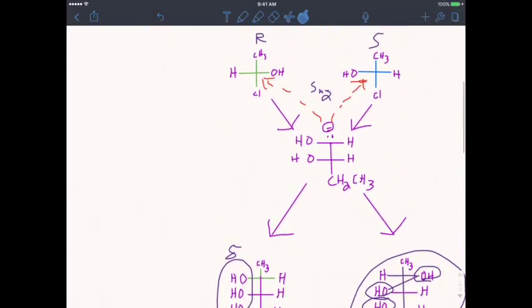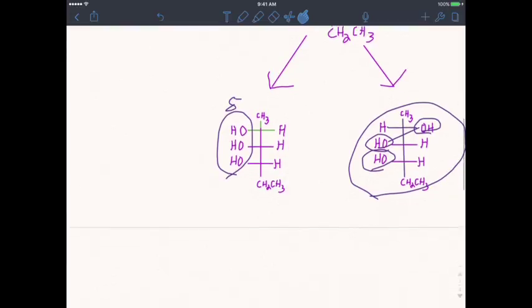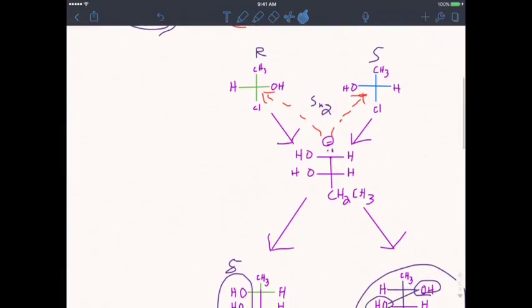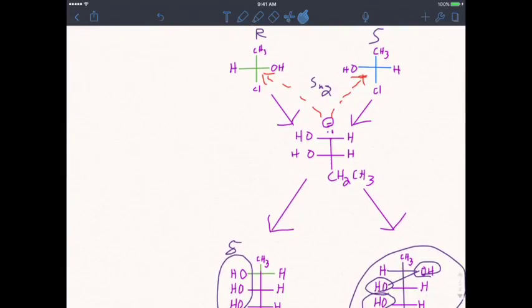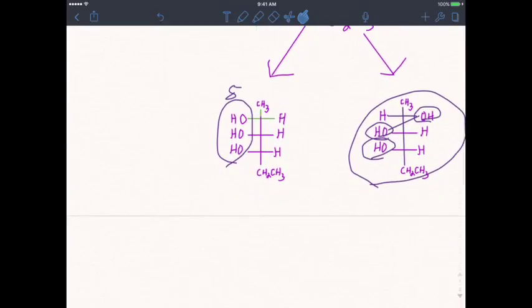So basically the way you resolve two enantiomers or a racemic mixture is you react them with an optically pure compound and boil them off afterward based on these new physical properties that you gave them. You can also call this optically pure if you make a salt out of them too and dissolve them, but they all play off of the same theory of forming diastereomers, because diastereomers have different physical properties due to different dipole moments.